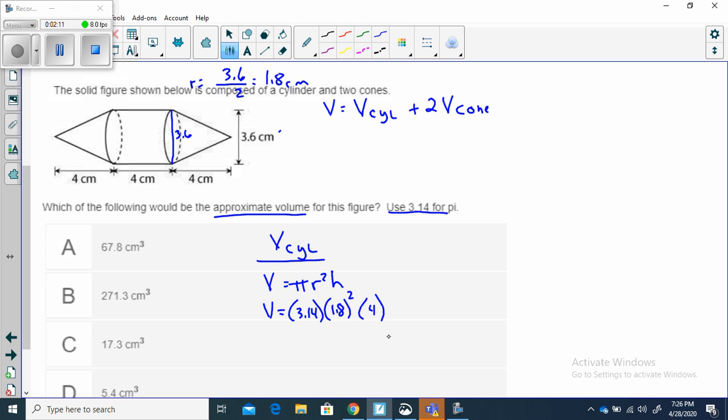Now we need to put that through our calculator. 3.14 times 1.8 squared times 4, and we get 40.7. That's 40.7 centimeters cubed. The volume of this is 40.7.